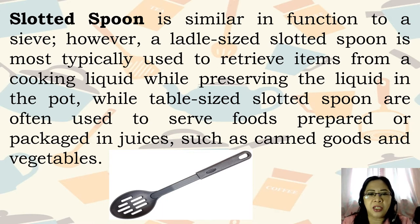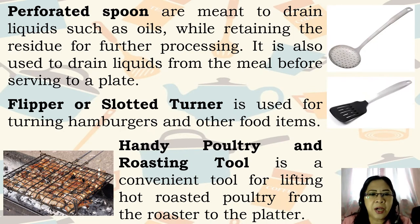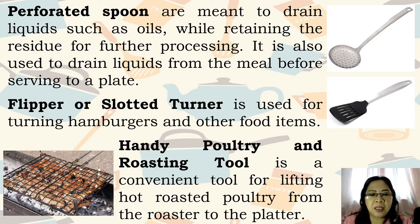Slotted spoon is similar in function to a sieve. A ladle-sized slotted spoon is most typically used to retrieve items from a cooking liquid while preserving the liquid in the pot, while table-sized slotted spoons are often used to serve foods prepared or packaged in juices such as canned goods and vegetables. Perforated spoons are meant to drain liquids such as oils while retaining the residue for further processing, and are also used to drain liquids from the meal before serving.